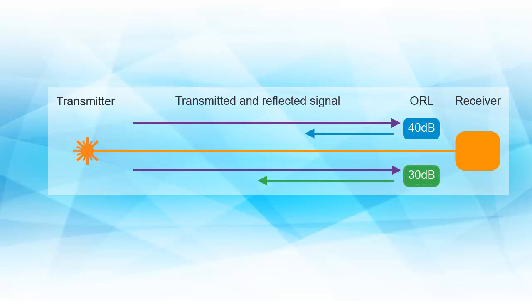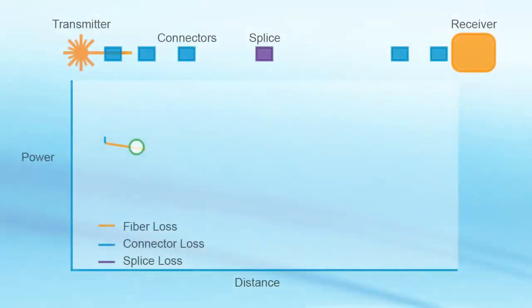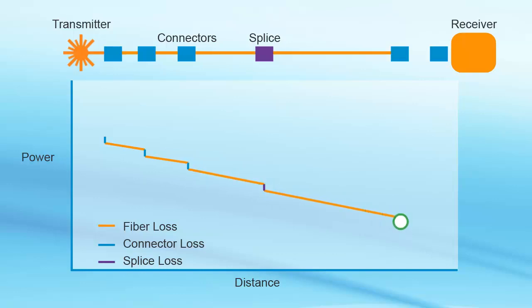It is important to note that ORL is expressed as a positive decibel value, whereas the reflectance of a connector is expressed as negative value. The reflectance value of an event, such as a connection, as well as its distance from the transmitter terminal, both affect the total ORL value.